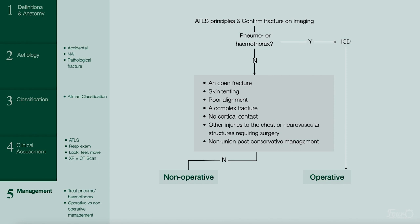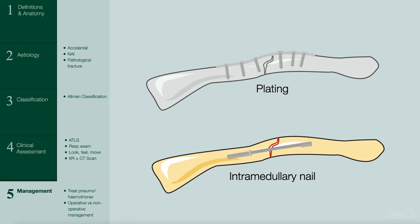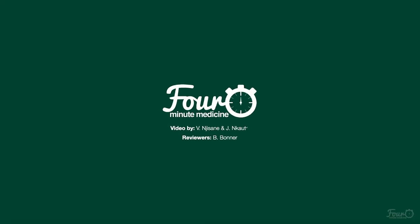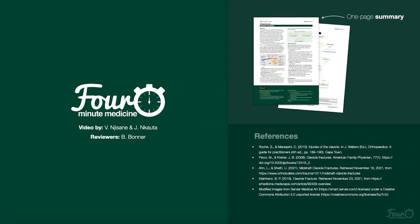Non-operative treatment includes a shoulder immobilizer, which is preferred, or a collar and cuff for three to four weeks to allow pain to settle and commence early range of motion. Those with indications for surgery will get an ORIF with a plate or intramedullary nail, as shown. For more information and a one-page summary and quizzes on clavicle fractures, visit 4minimedicine.com.